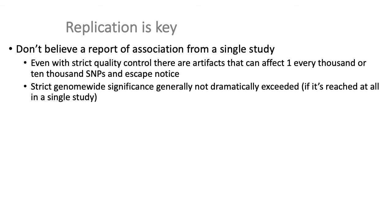Even the best-conducted studies can have hidden confounders — distantly related individuals, or population structure that PCA or linear mixed models can't completely remove. It's generally not a good idea to chase associations reported by only one study, regardless of whether genome-wide statistical significance is reached. The bar for following up on an association should be replication in at least one or two other independent studies, because false positives are too easy to generate in GWAS.